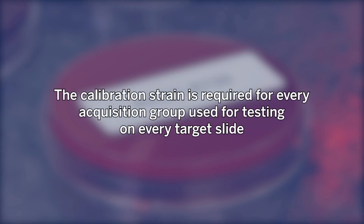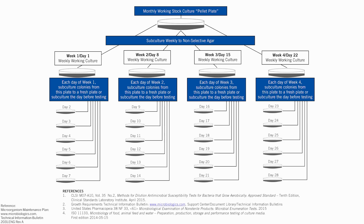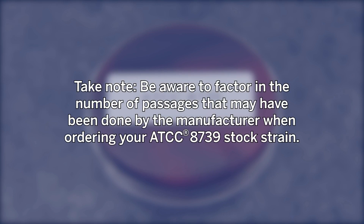The calibration strain is required for every acquisition group used for testing on every target slide. For weeks 2, 3, and 4, a new working culture plate is subbed from the stock culture plate, and the same procedure outlined for week 1 is followed. The previous week's working plate should be properly discarded. At the end of 4 weeks, a new reference stock culture is used to subculture a new working stock culture plate. Be aware to factor in the number of passages that may have been done by the manufacturer when ordering your ATCC 8739 stock strain.